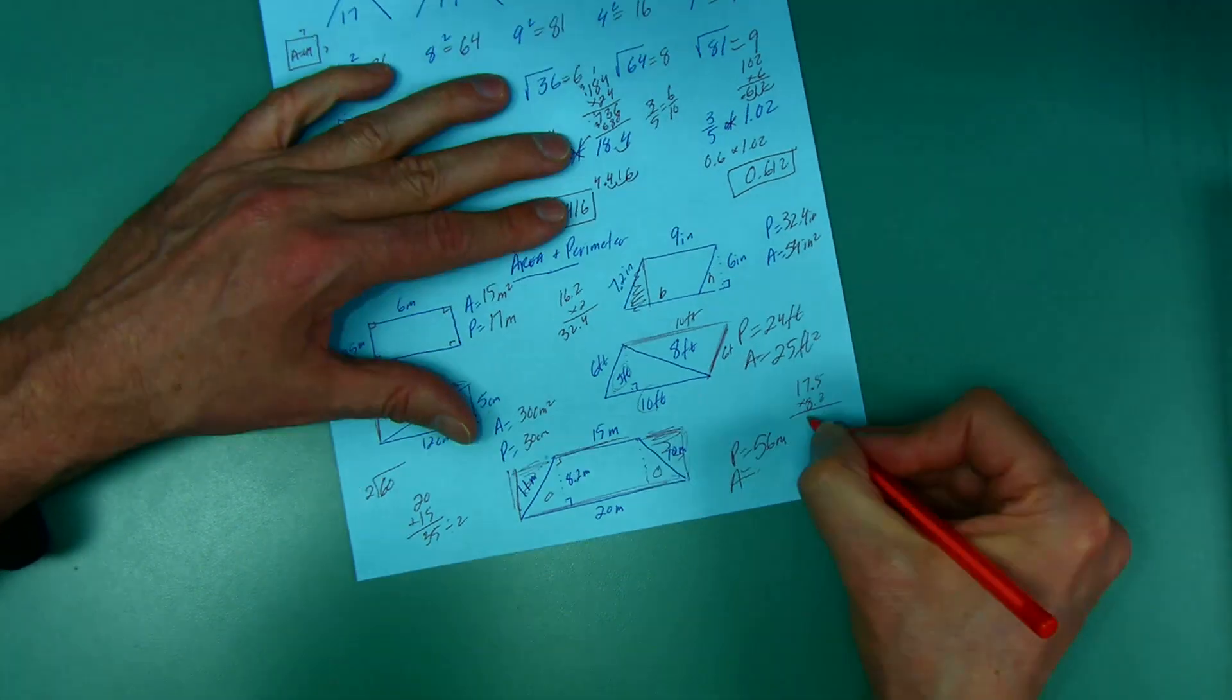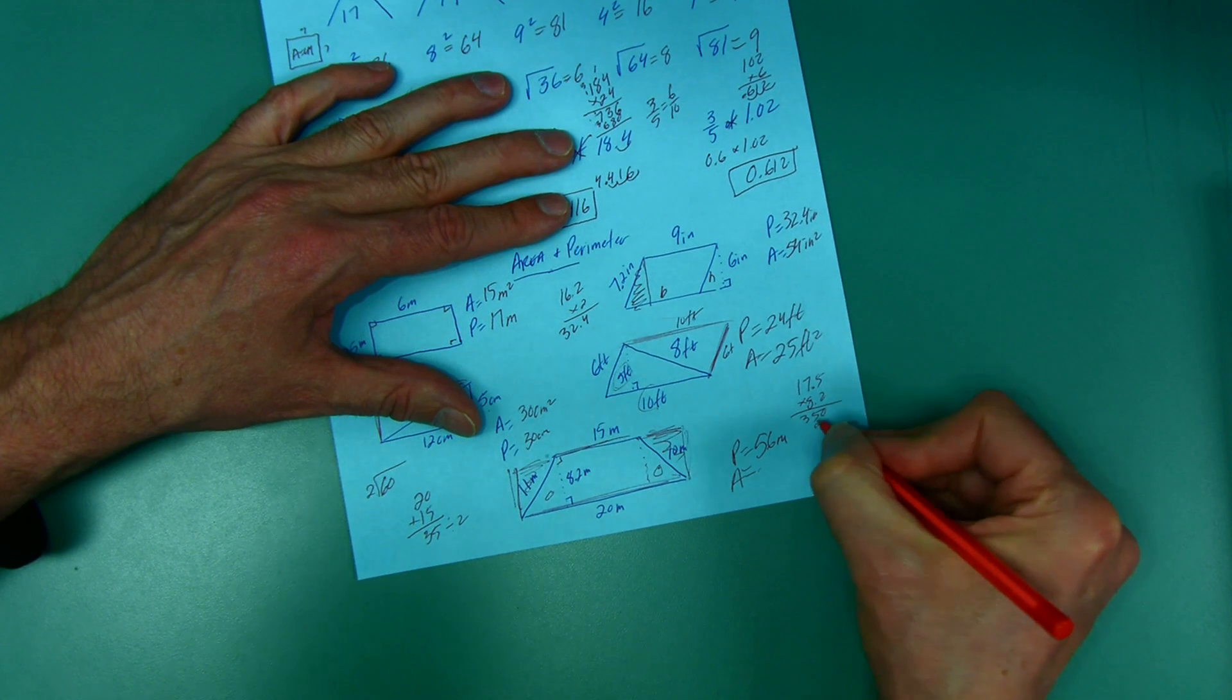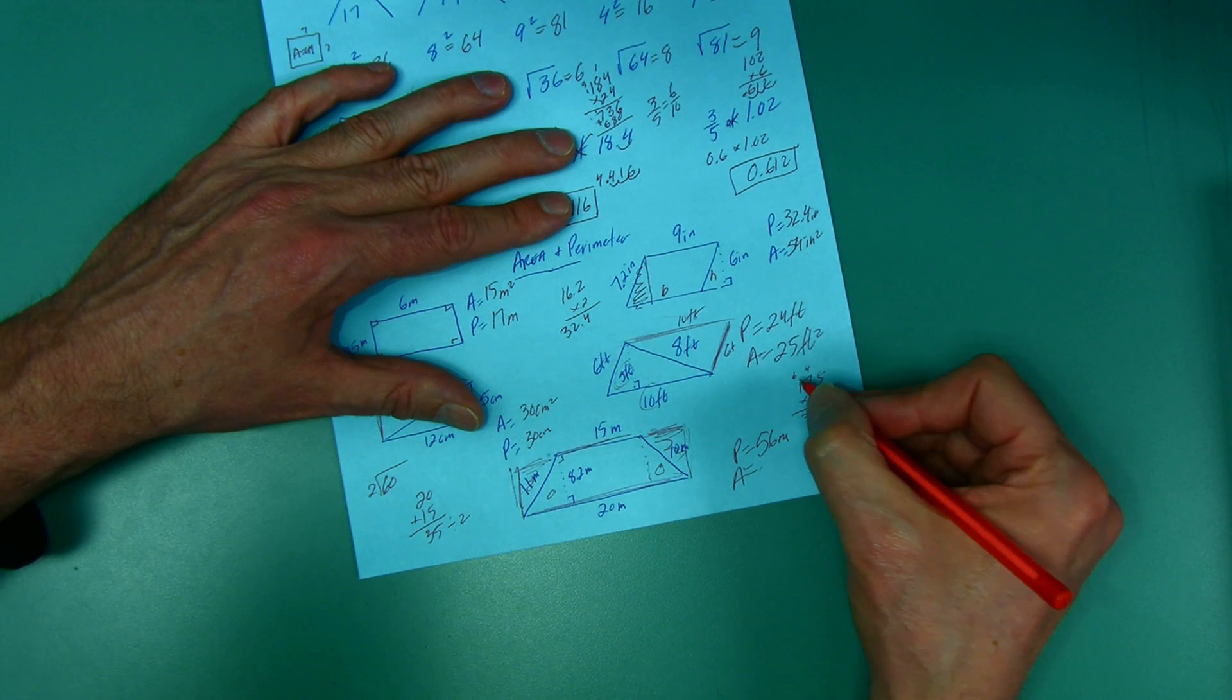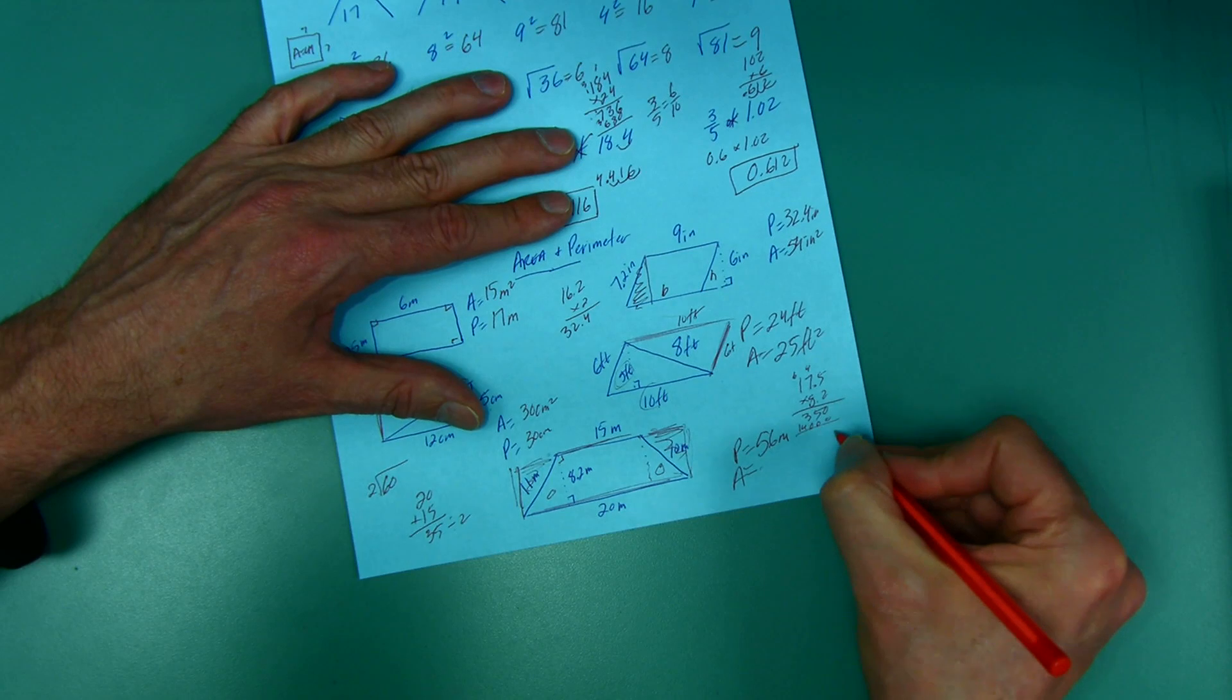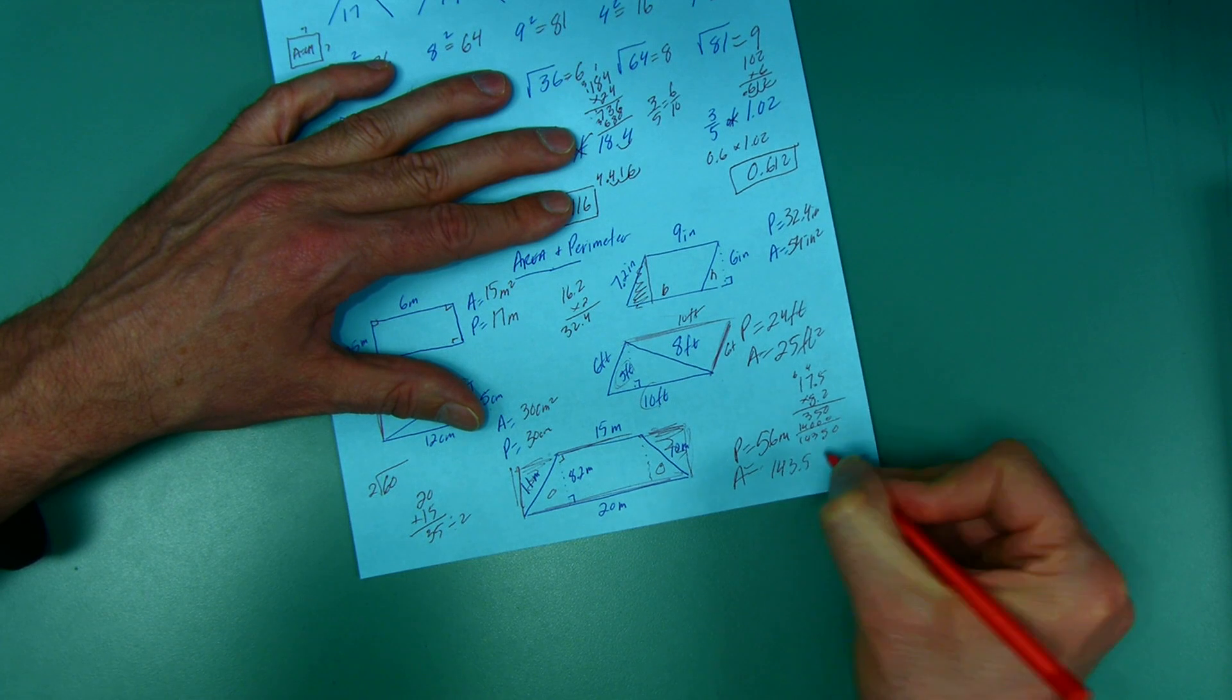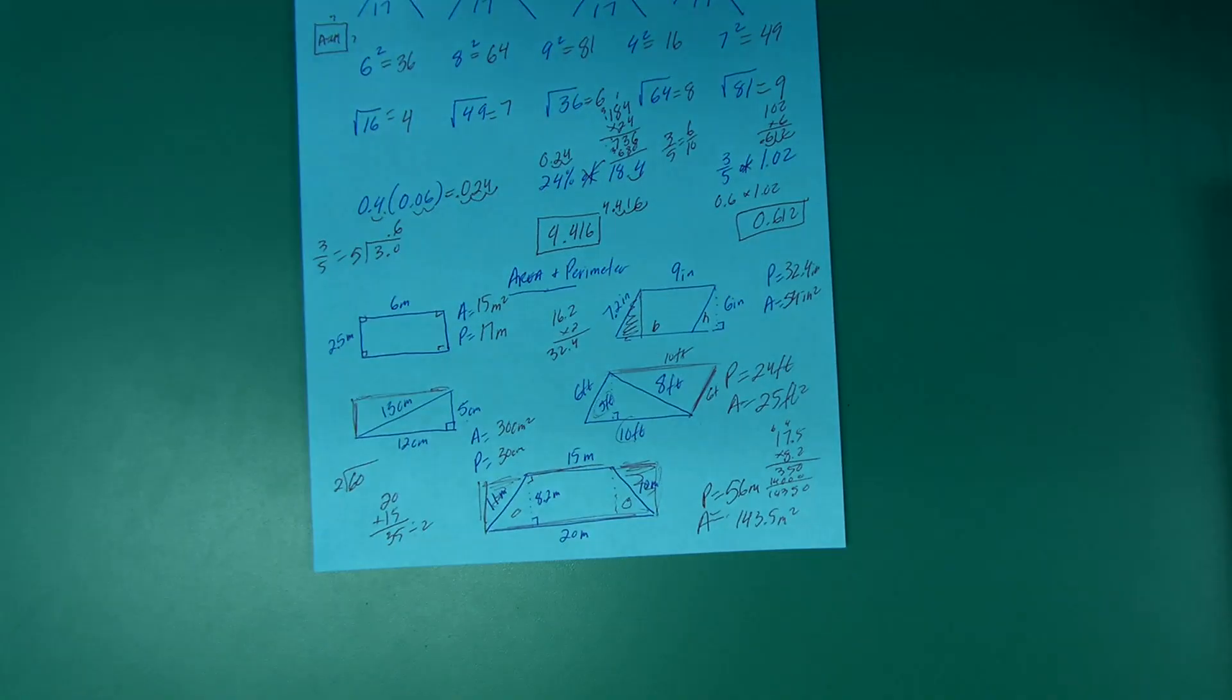So again, you're going to pretend like there's no decimal - 82 times 175. And move it over two spots. So here is 143.5 square meters.